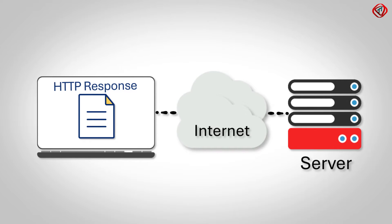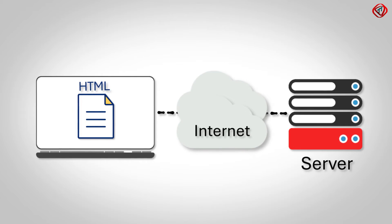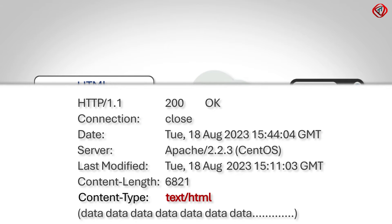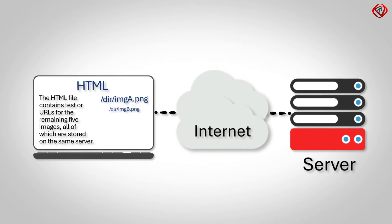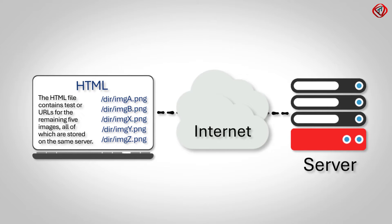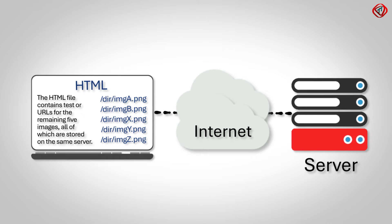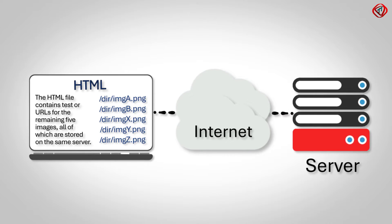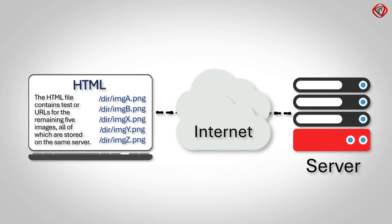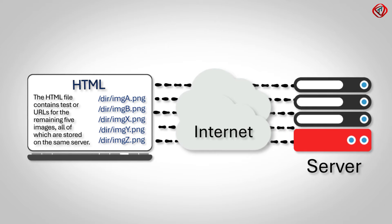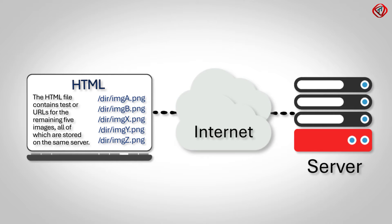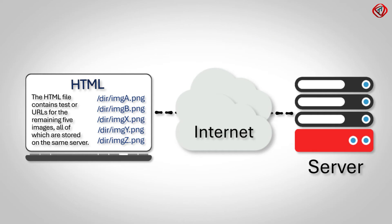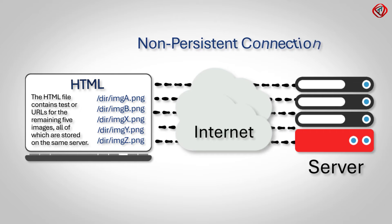In our example, the initial object sent to the web browser is an HTML text file. This information is encapsulated within the HTTP response message. The HTML file contains text and addresses or URLs for the remaining 10 images, all of which are stored on the same server. Once your web browser reads the HTML file, it asks the web server for the other 10 images over the existing TCP connection or via 10 distinct TCP connections. When the existing TCP connection is used to fetch 10 images, it is called a persistent connection. When 10 distinct TCP connections are used, it is called a non-persistent connection.